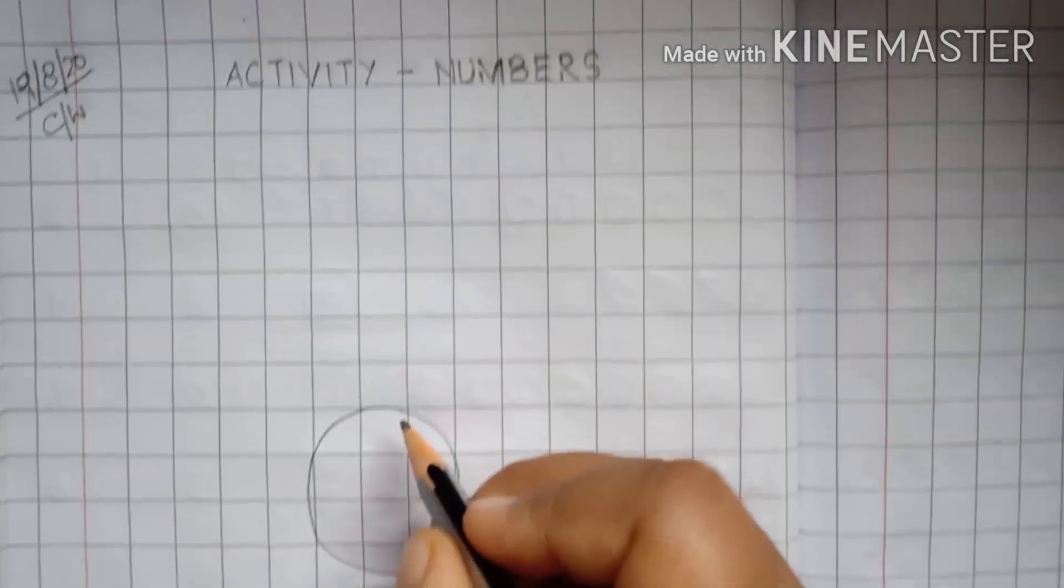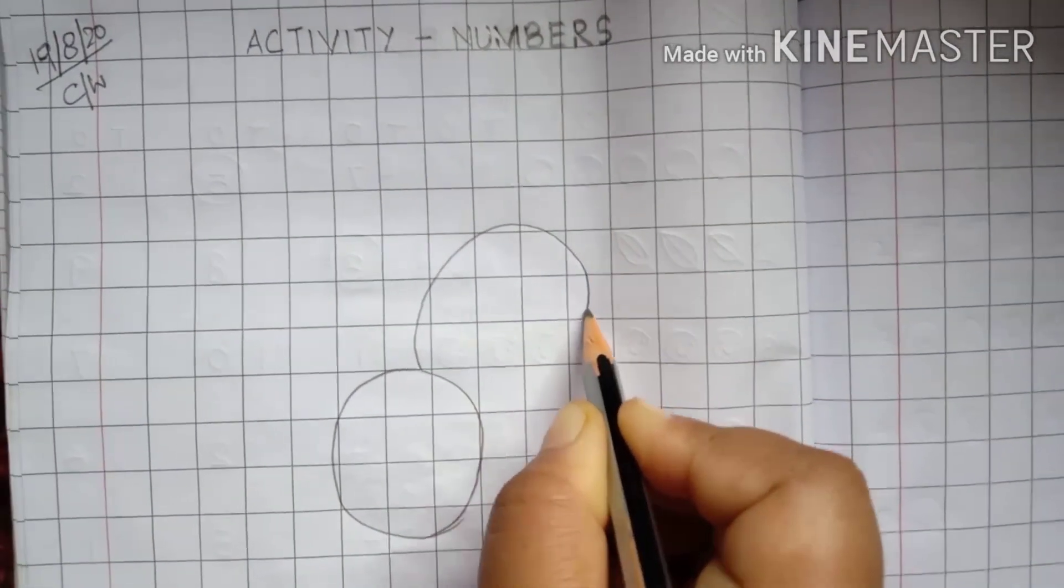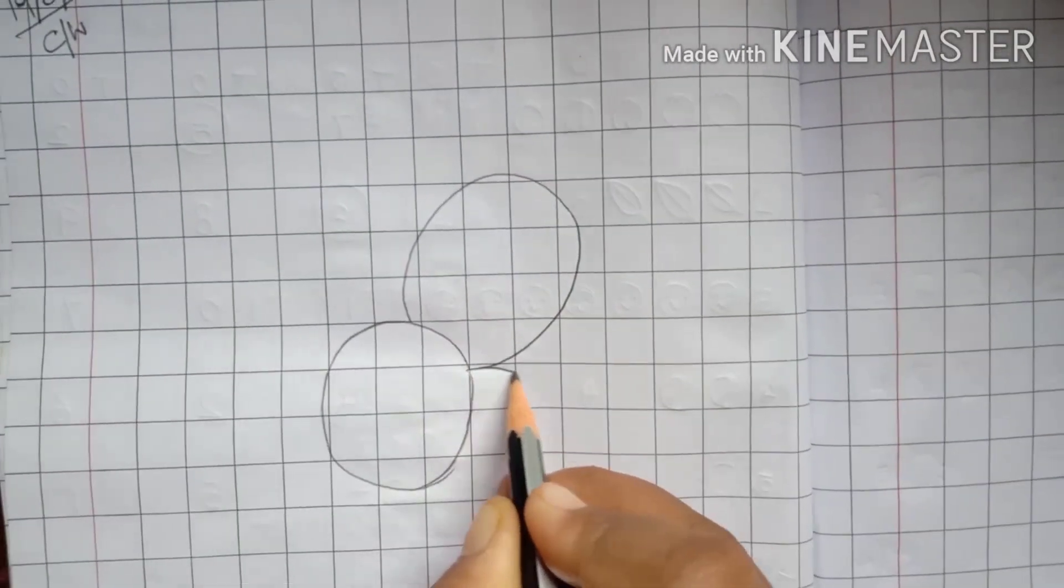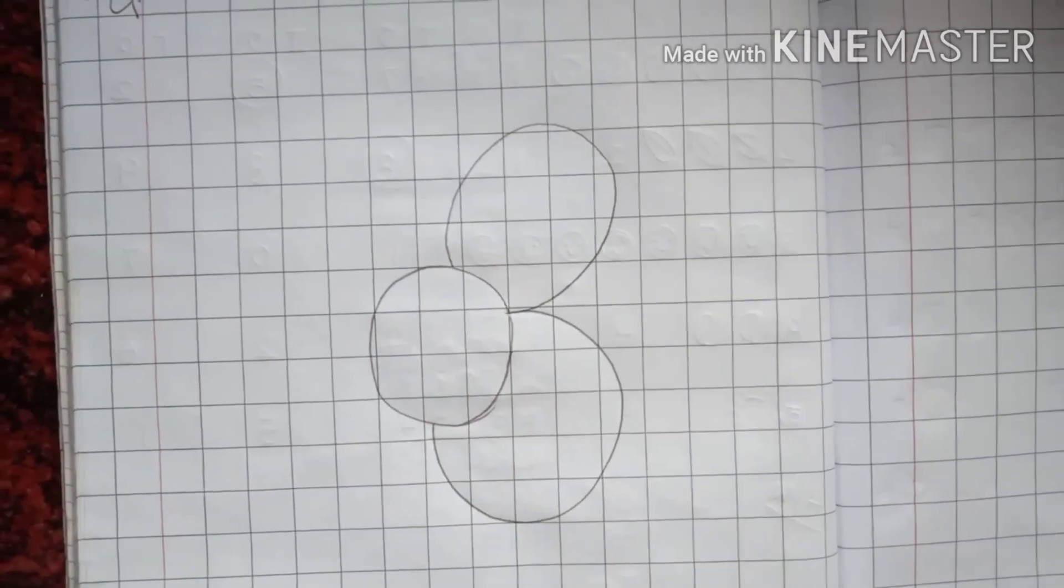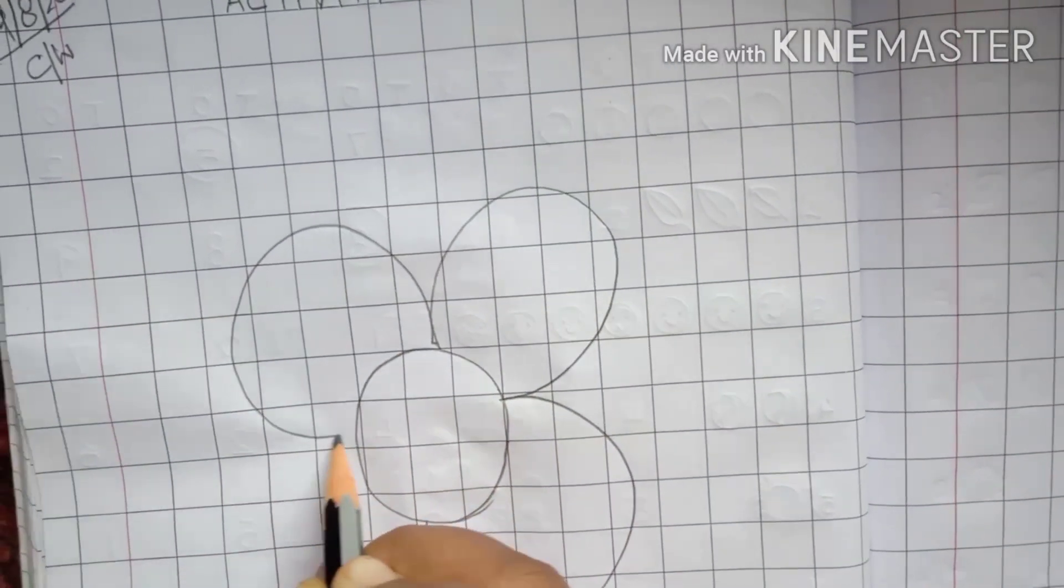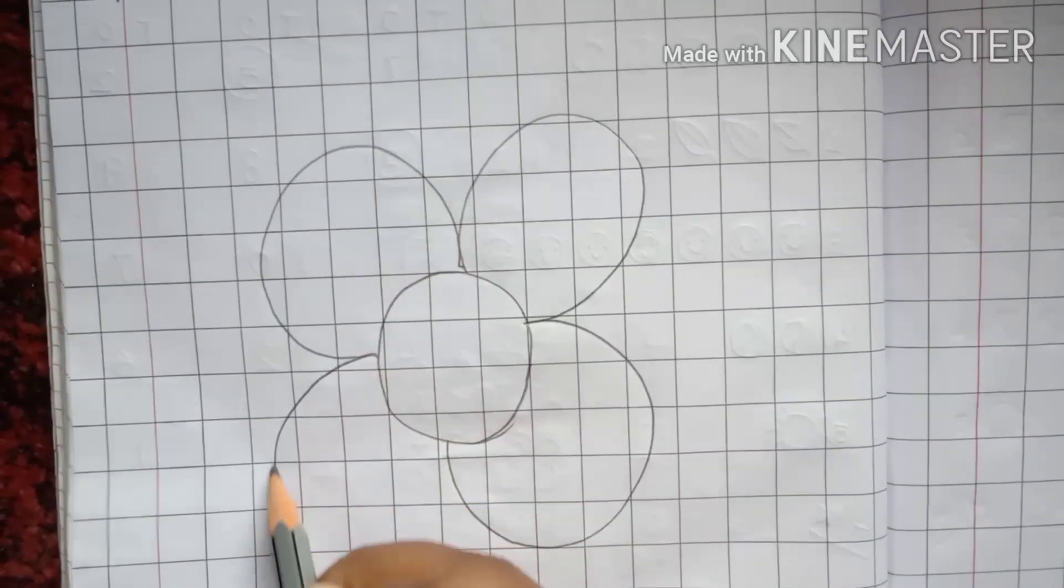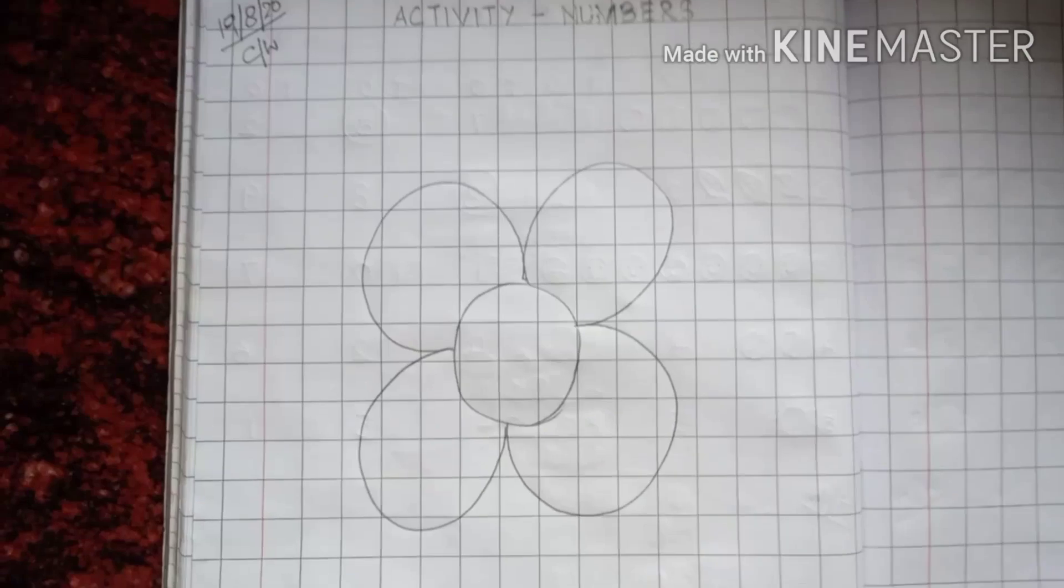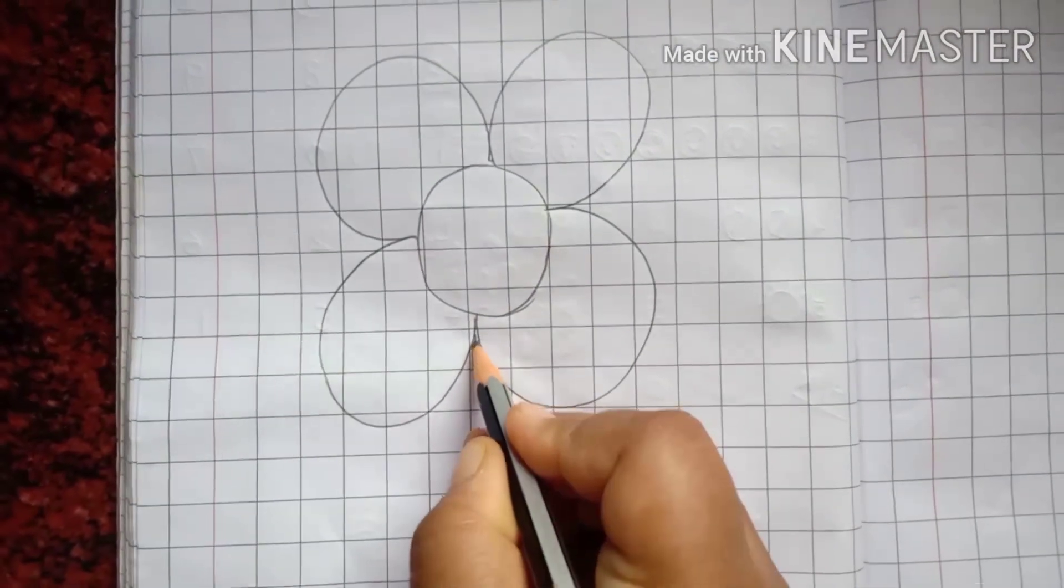Then we will draw the petals, the petals of the flower like this. One, two, and the third petal and the fourth one. Here we go. This is a flower. We have drawn a flower.